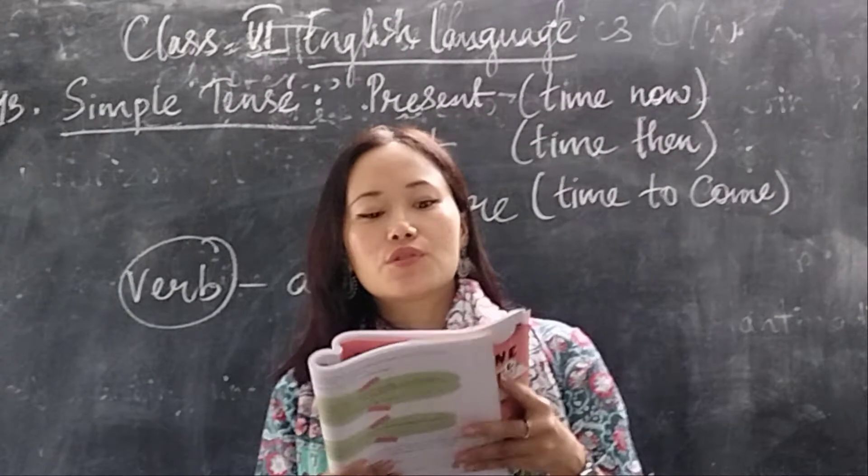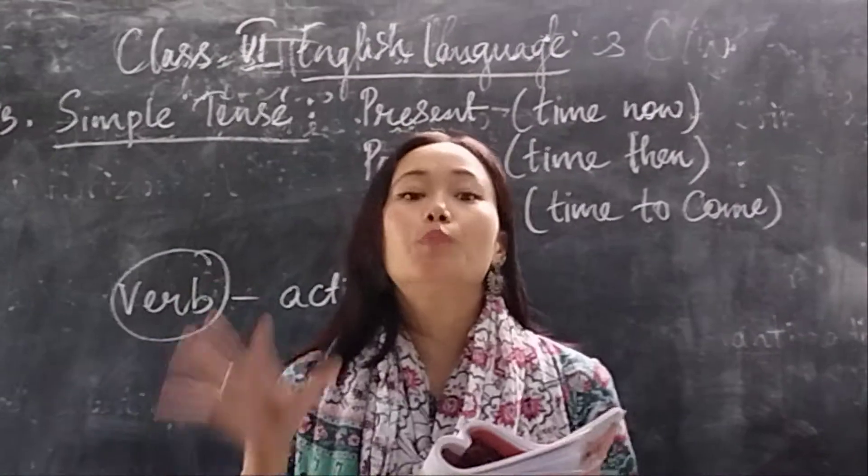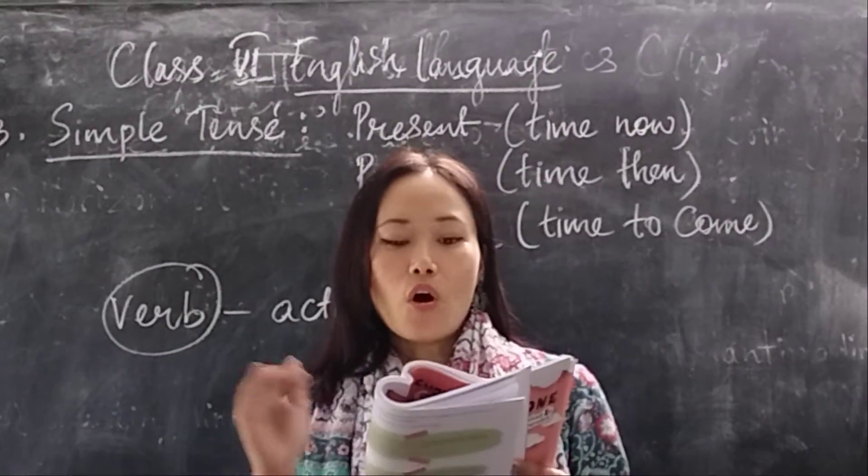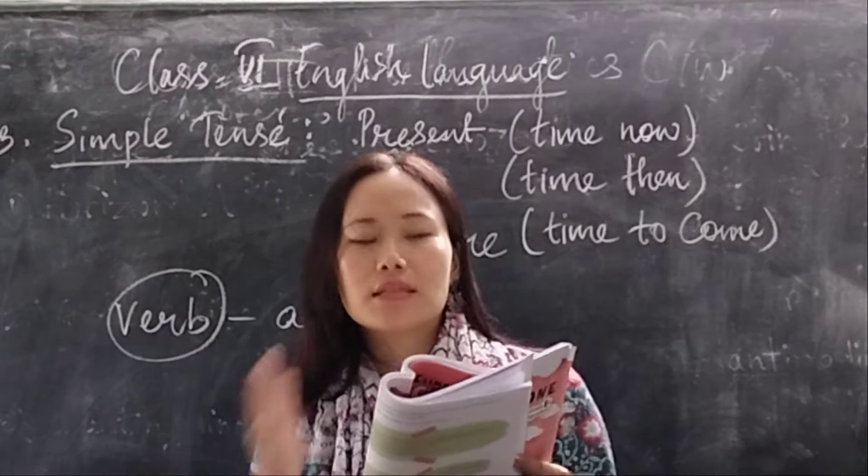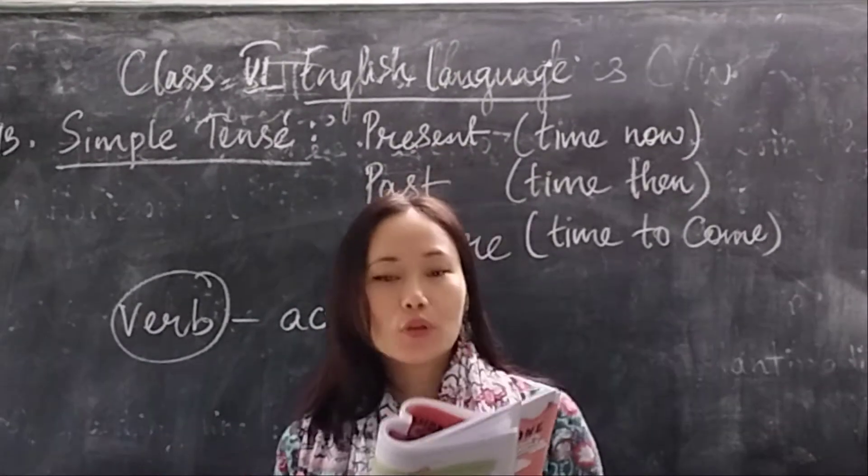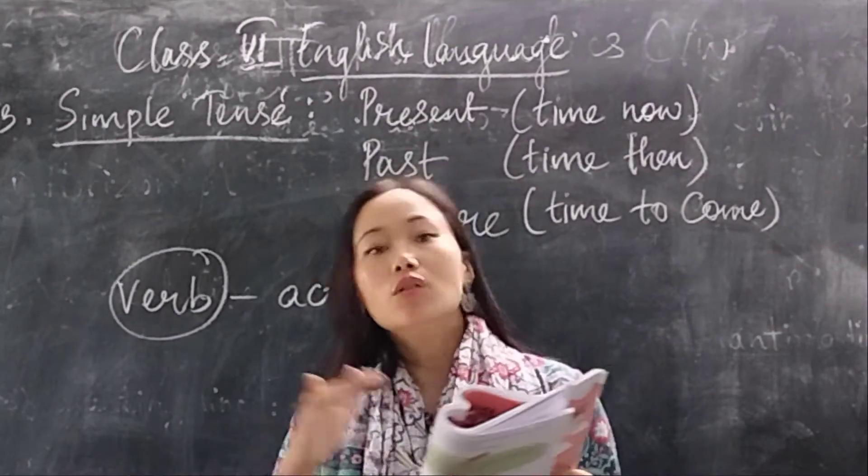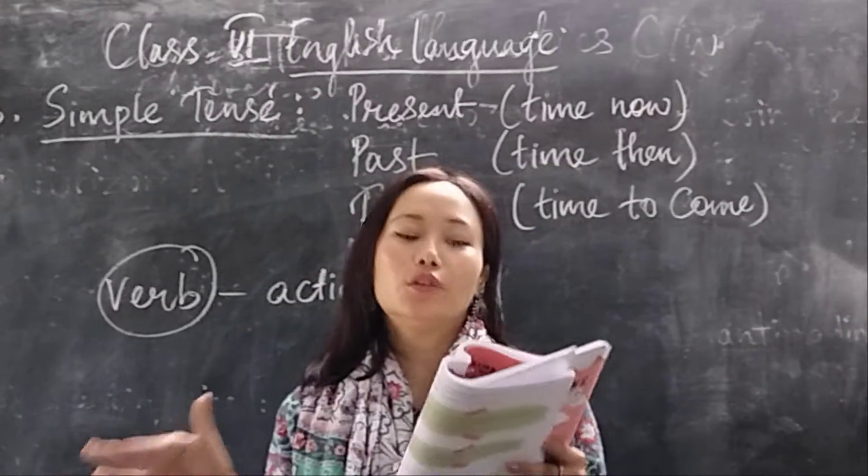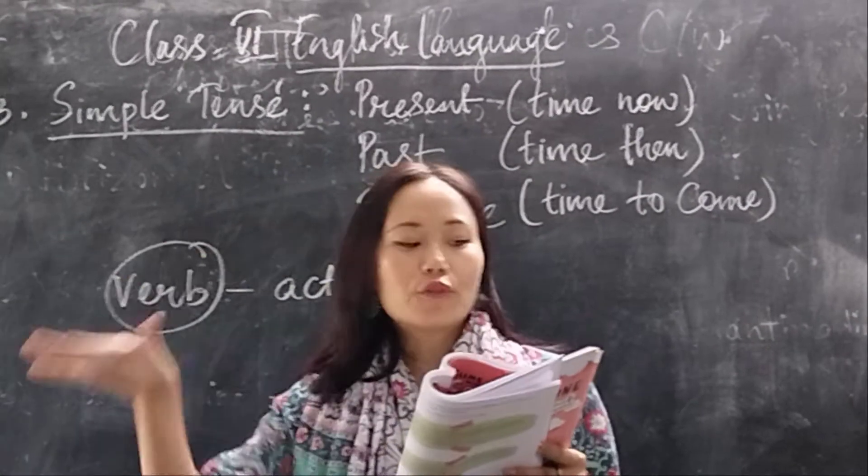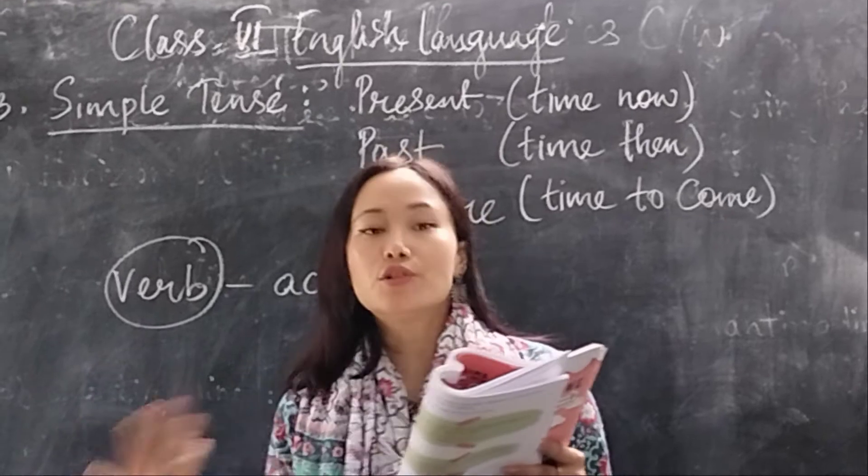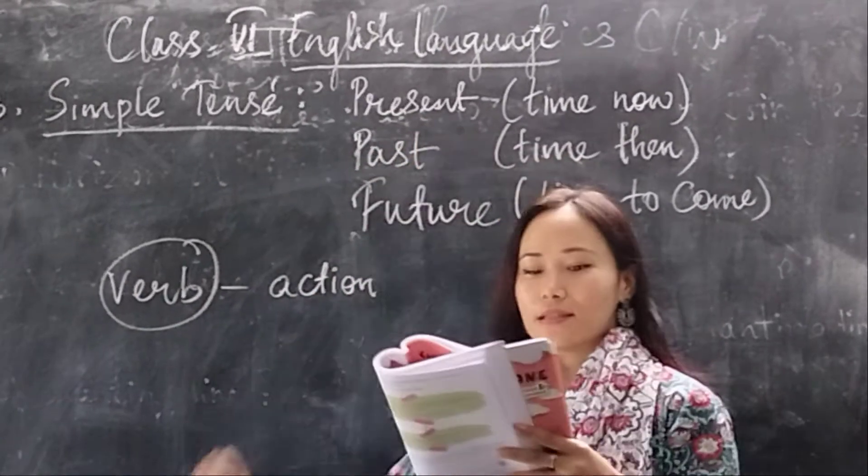Also, we use simple present tense to describe something that is almost common, or it has been happening for some time and it still continues. For example, we need to use formula. That is almost common. It has been happening for a very long time and it still continues. We use simple present tense.